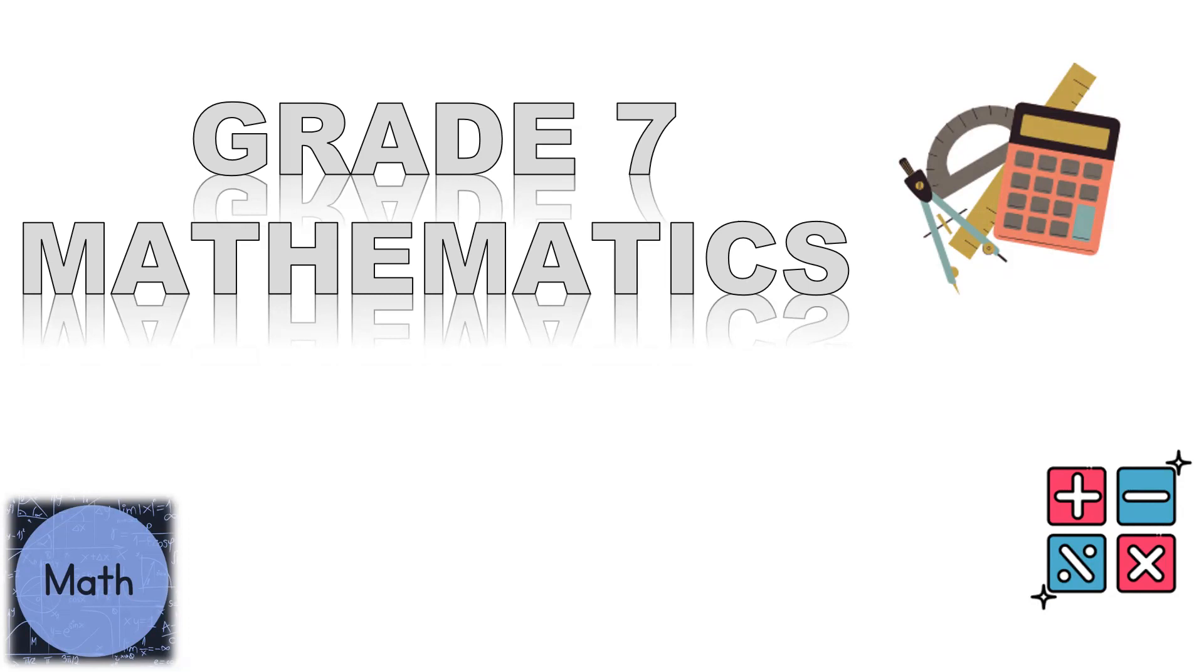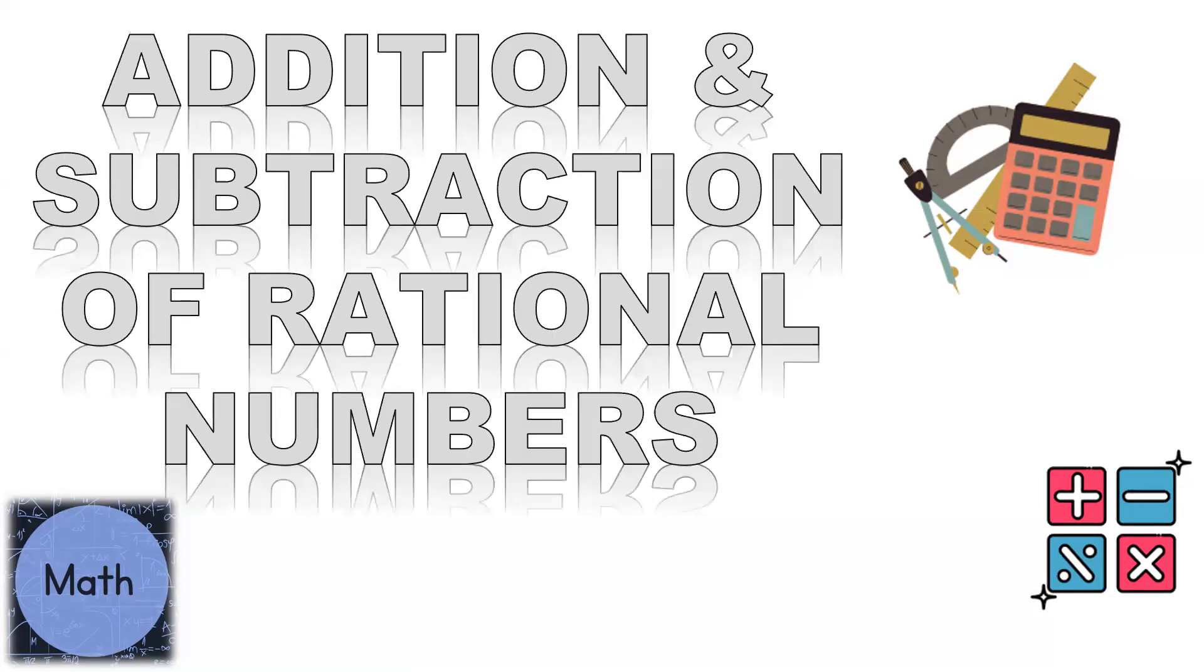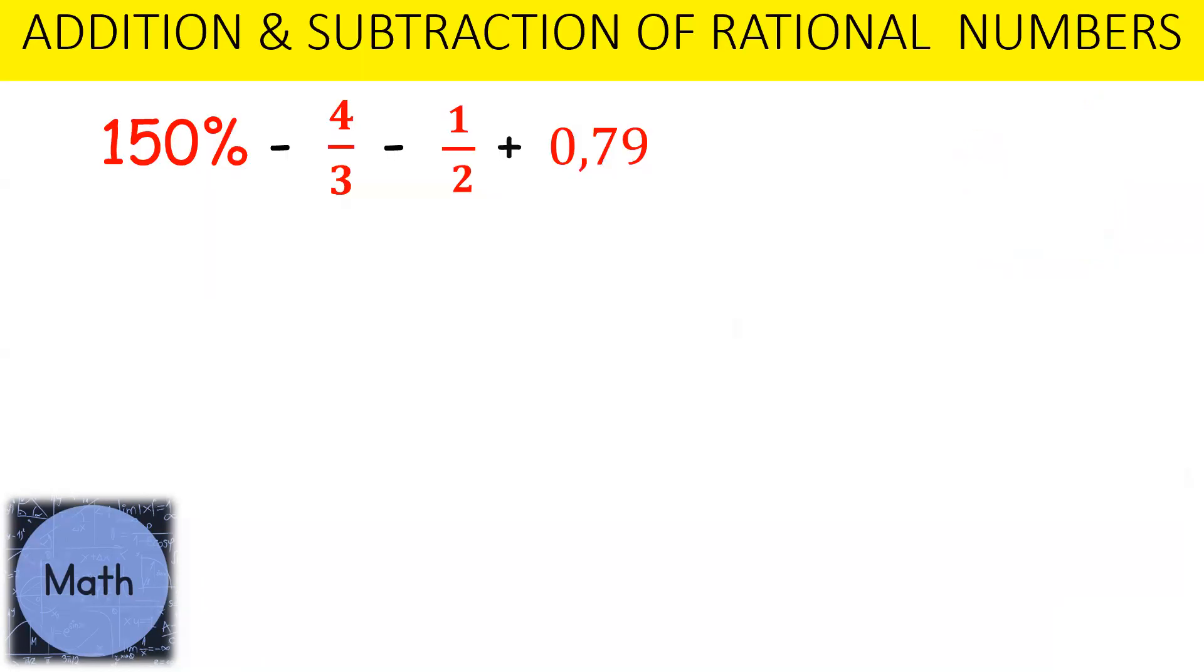For this video in Grade 7 Mathematics, we'll be looking at the addition and subtraction of rational numbers. In this example, we have 150% minus 4 over 3, minus a half, plus 0.79.